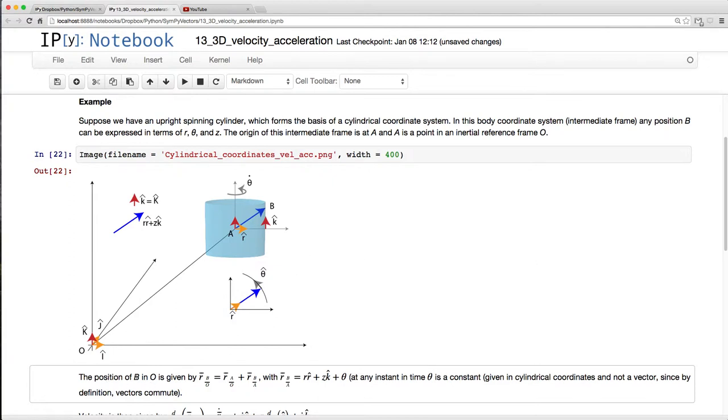So, if I were just to look at position of B in O, it's given by R of A and O plus B and A. But now I'm going to express B and A in a different form. I'm going to express it as R in the R hat direction and Z up in the K hat direction and theta. But theta, you've got to be very careful about. That's looking from the top. It's going to make some angle, but theta is not a vector. Remember that's not a vector. It doesn't commute, so you can't use that as a vector.